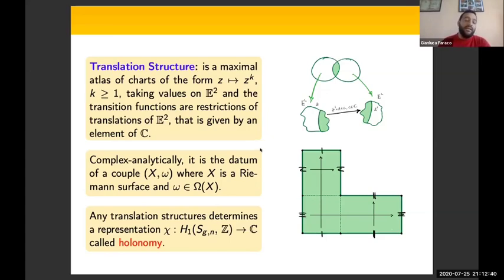From the complex analytical point of view, a translation structure is a couple (X, ω) where X is a Riemann surface and ω is an abelian differential.